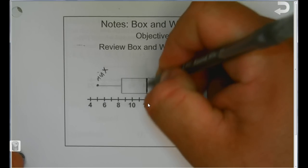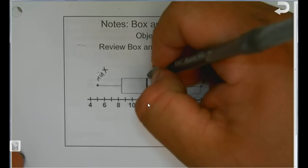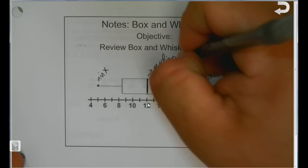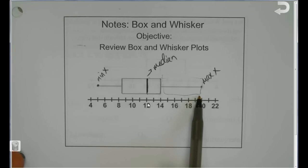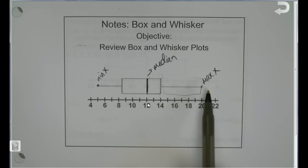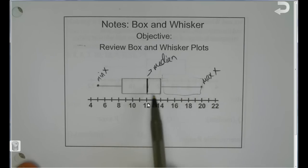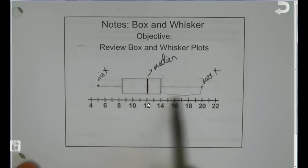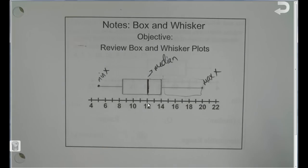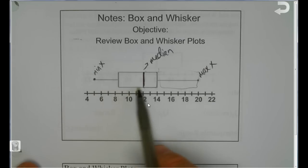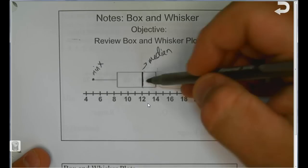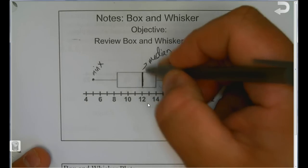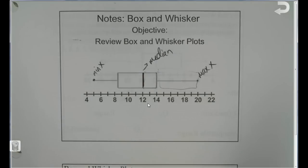This line right here is what we call the median. It's the point at which half of the data is on one side and half is on the other. For example, if we had 10 data points, five would be on this side and five on that side. With 15 data points, seven would be on each side with one right in the middle. We call this the second quartile — Q2 is the median, and it breaks the data into two separate halves.